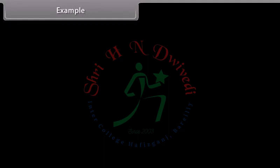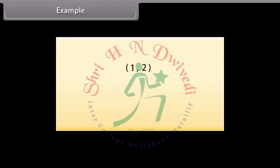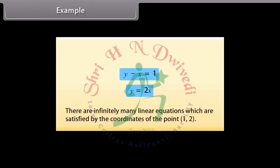Example. Let us go through an example. Take the point (1, 2). We will find the equation of a line on which it lies. Since (1, 2) is a solution of a linear equation, we look for any line passing through the point (1, 2). One example is X plus Y is equal to 3, because when we put X as 1 and Y as 2, we get the answer 3. Other examples are Y minus X is equal to 1 and Y is equal to 2X. In fact, there are infinitely many linear equations which are satisfied by the coordinates of the point (1, 2).